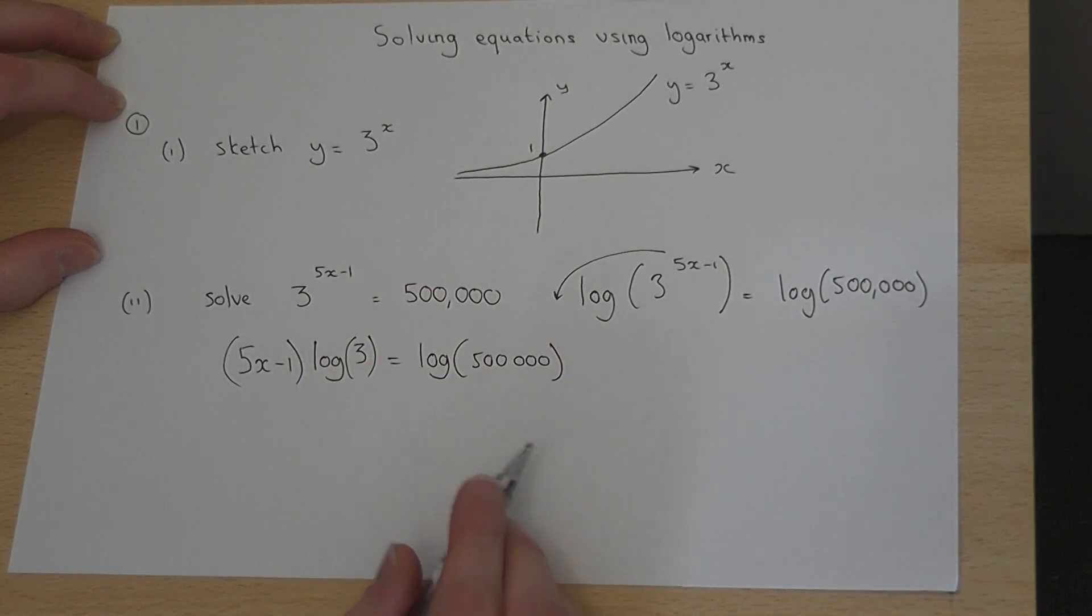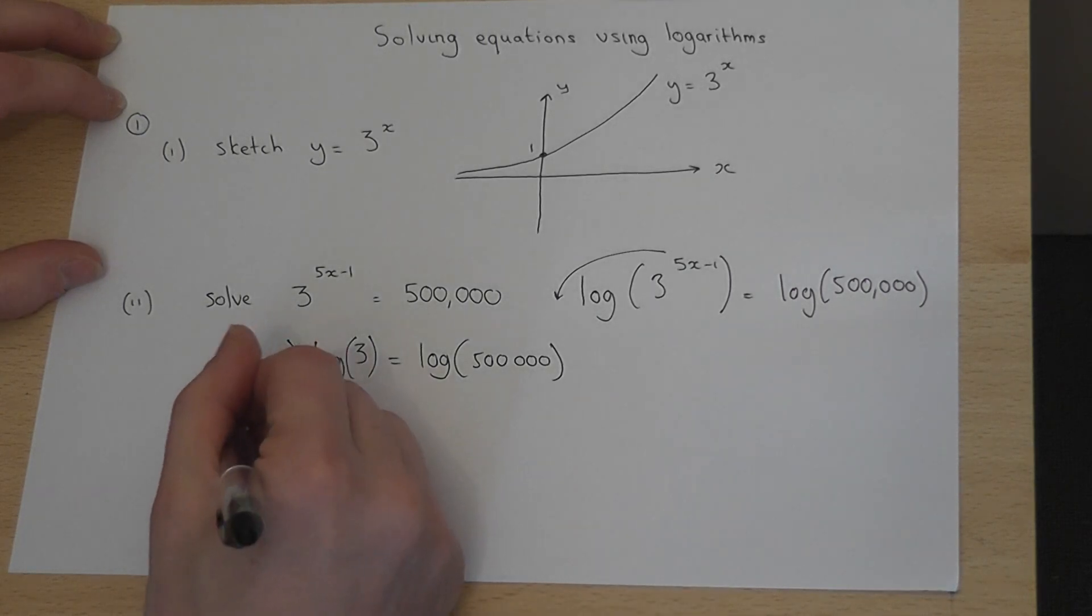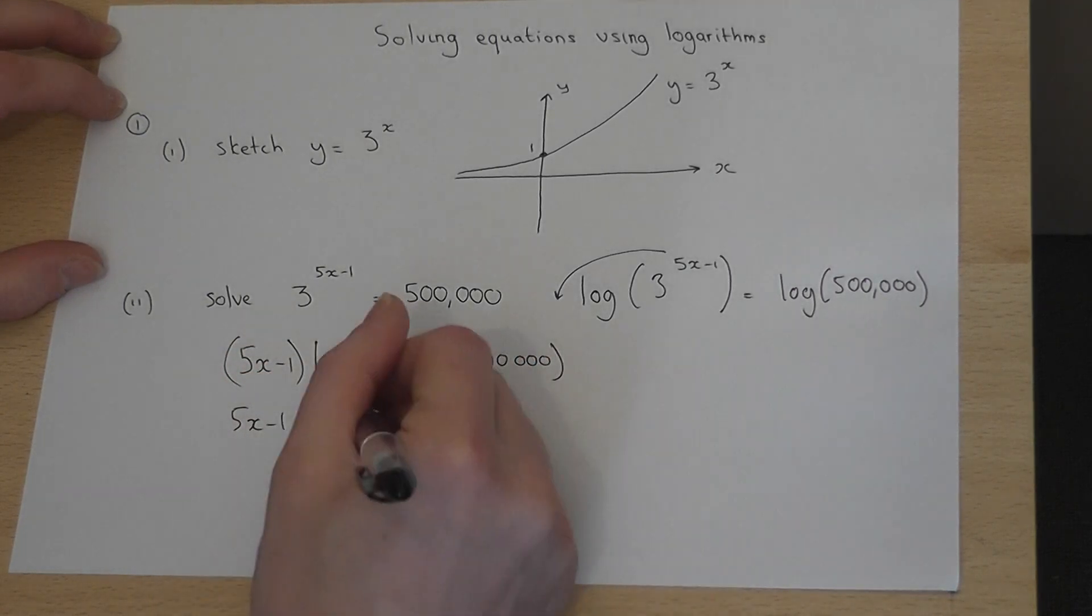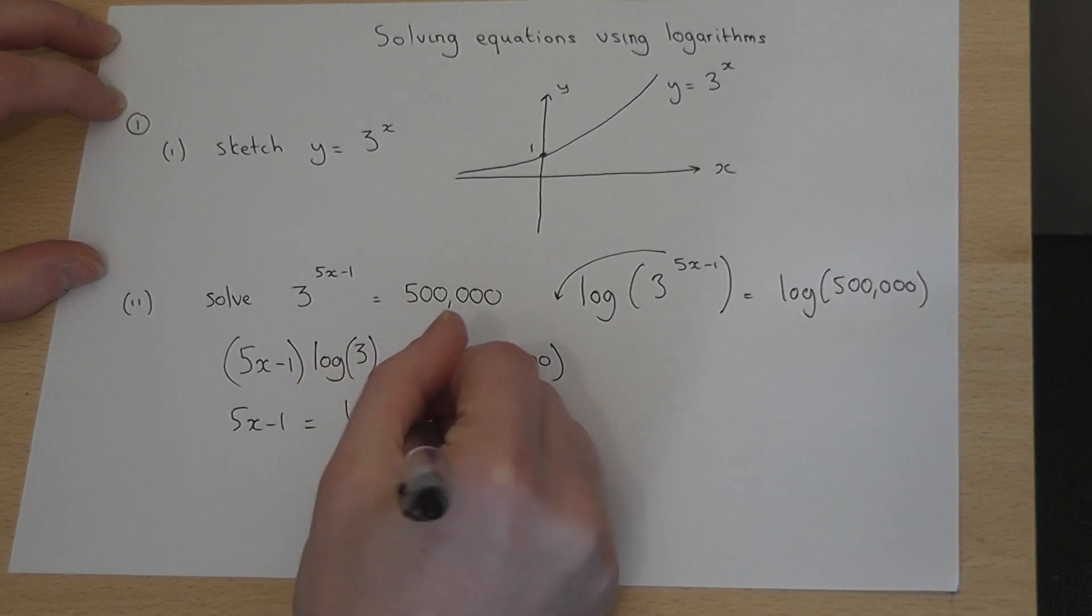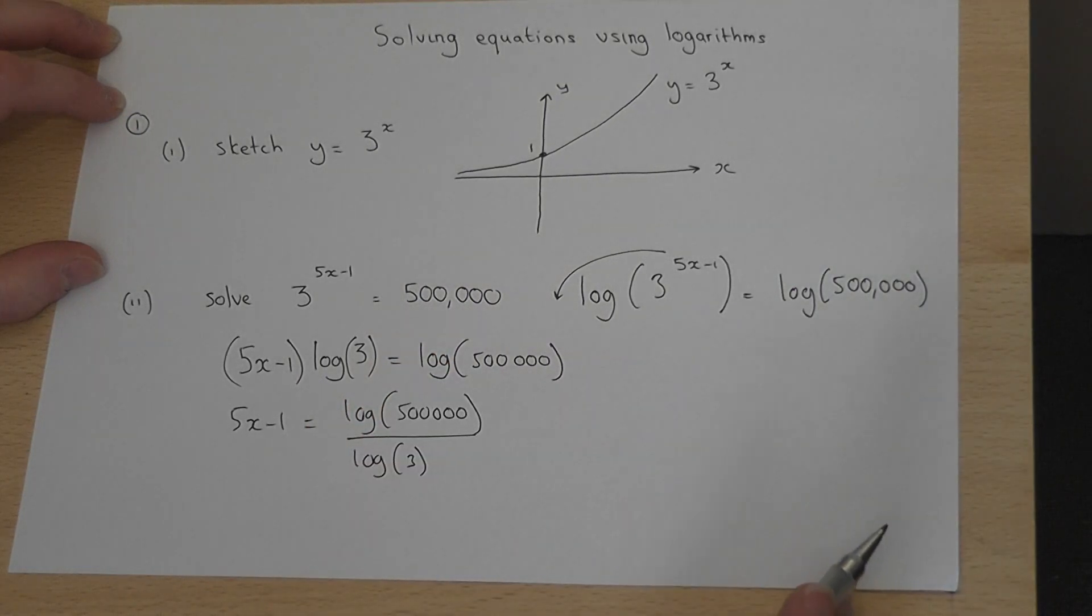So to rearrange this equation to get x equals, I begin by dividing by log 3. So 5x minus 1 equals log of 500,000 divided by log of 3. So we're almost there.